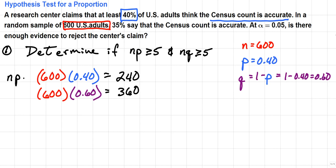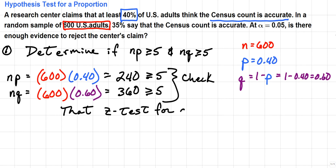This is n times p, this is n times q. N times p has to be greater than or equal to 5, likewise n times q has to be greater than or equal to 5. So both of these check, and that means a z-test for proportion can be used.